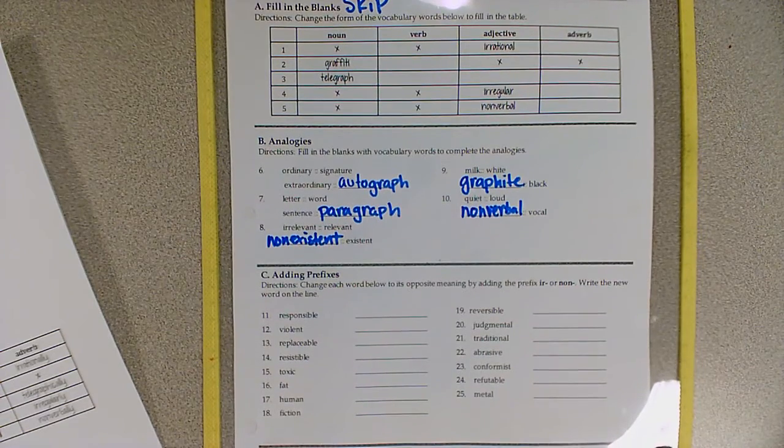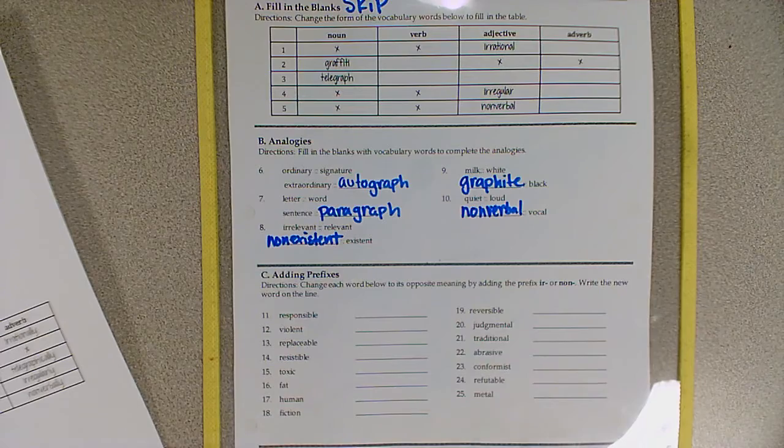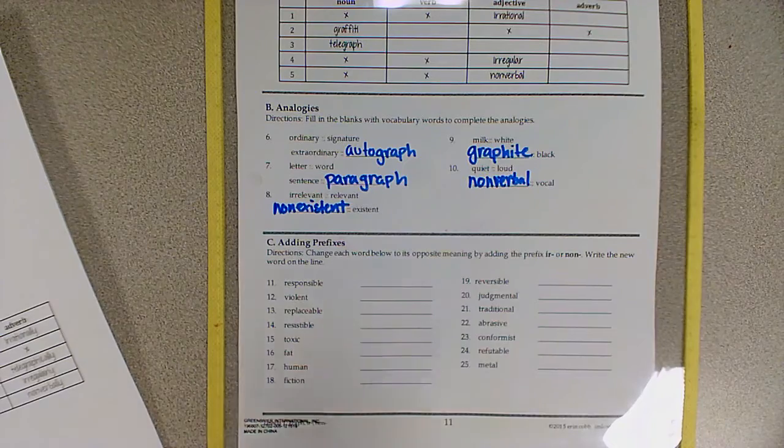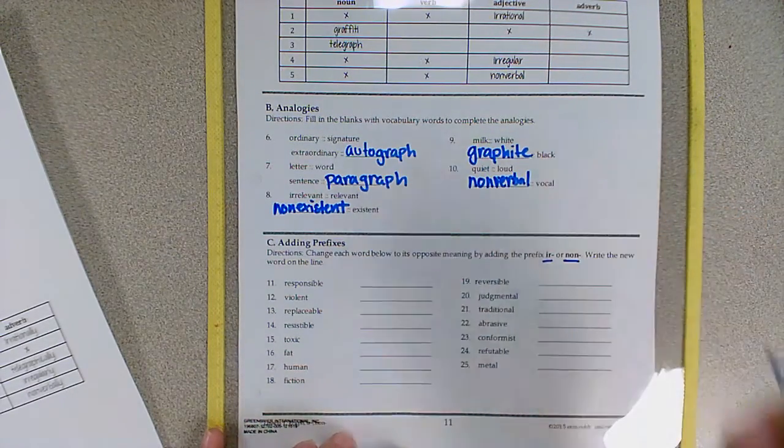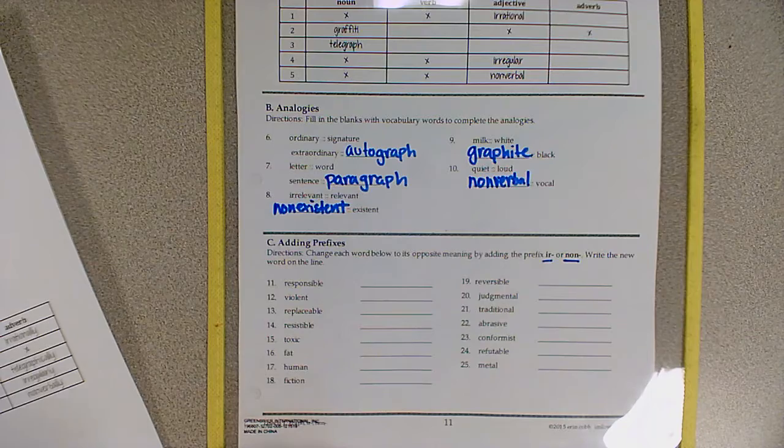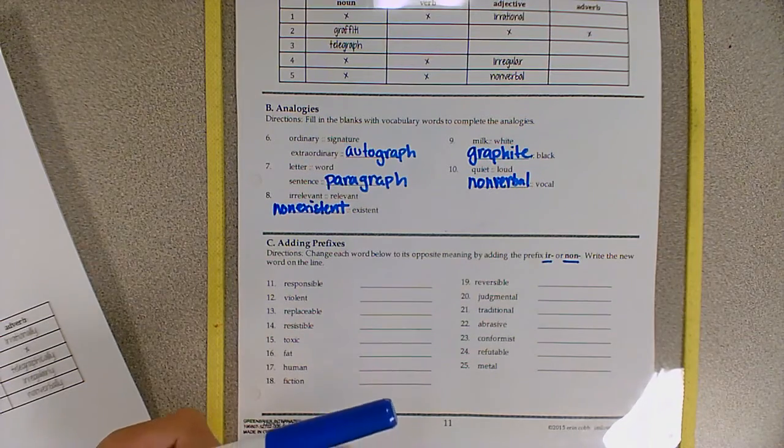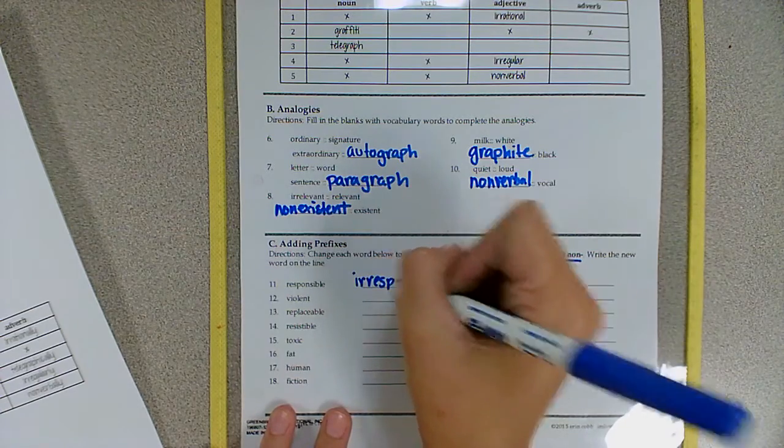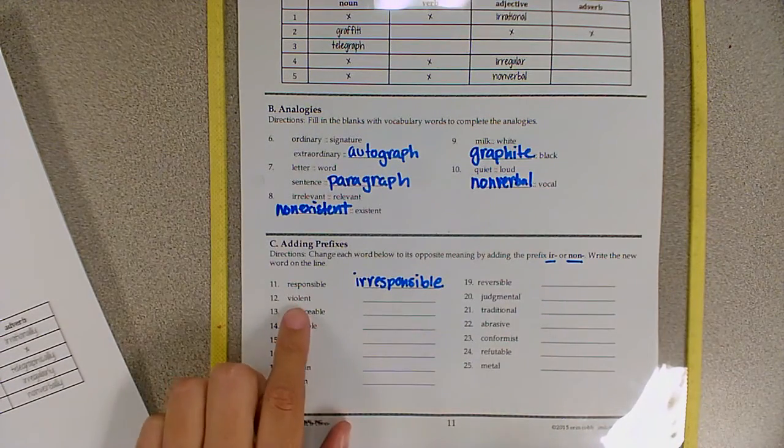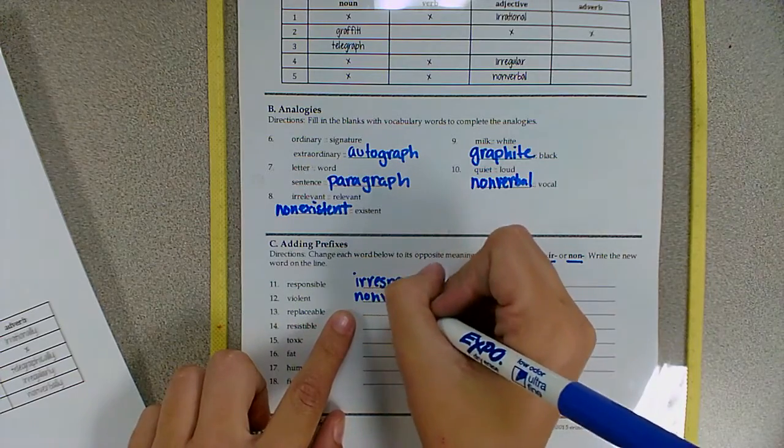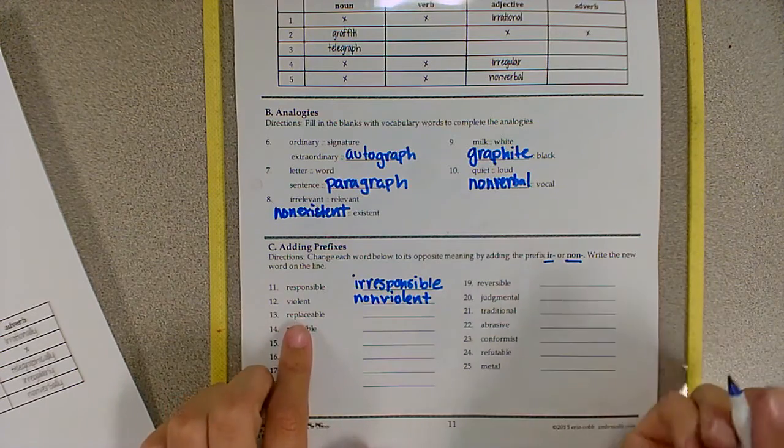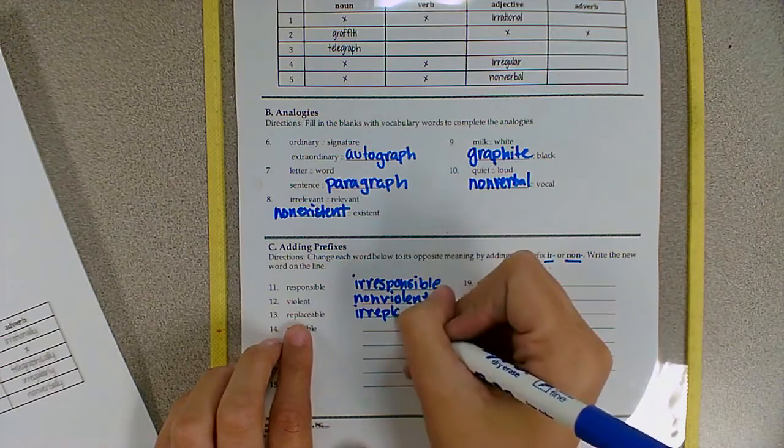If you need more time to write those down, this would be a great place to pause the video. Next, we're going to look at part C, adding prefixes. We're going to use our two prefixes, ir and non, to write new words on each line. But make sure that we're writing real words and not nonsense words. So responsible, the opposite of responsible would be irresponsible. Not violent would be non-violent. Not replaceable would be irreplaceable.